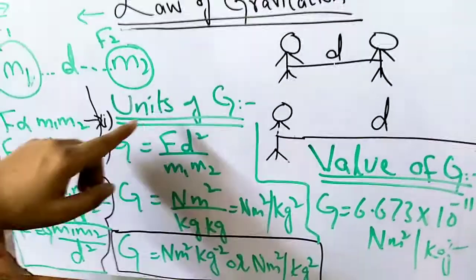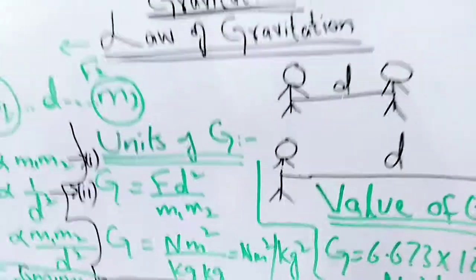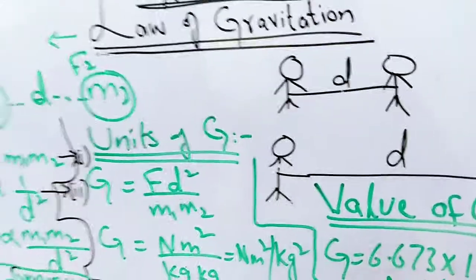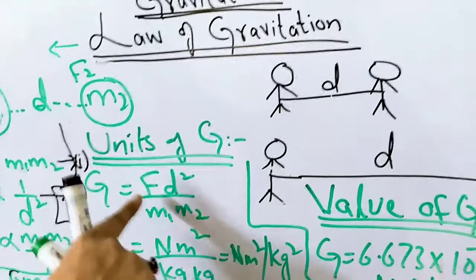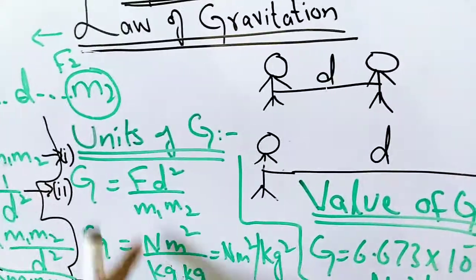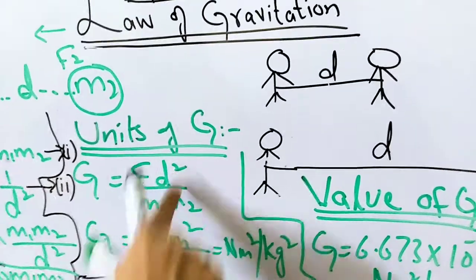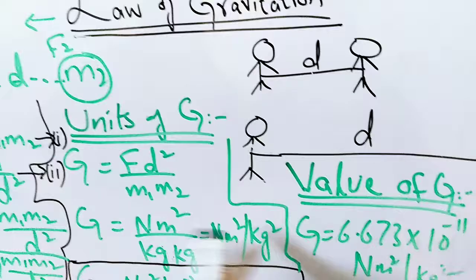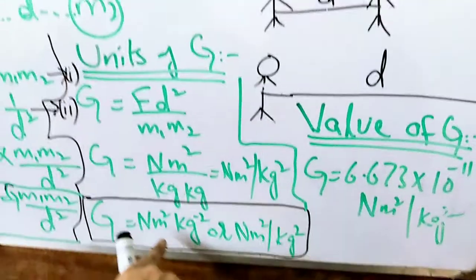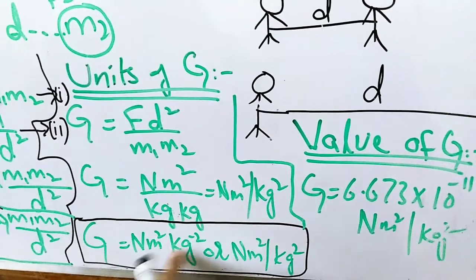Next, we find the units of G. Rearranging the formula, G equals F times D squared divided by M1 times M2. Substituting units — unit of F is Newton, unit of distance is meter, unit of mass is kilogram — we get: the unit of G is Newton meter squared per kilogram squared.